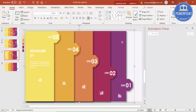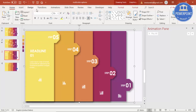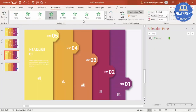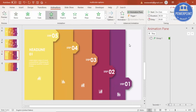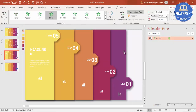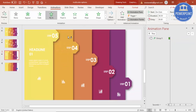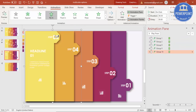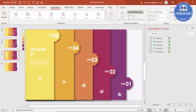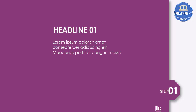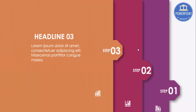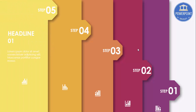Now apply the animation to step one: Fly In from Left. Then double-click Animation Painter and apply it to step two, step three, step four, and step five. In slideshow view, clicking reveals step one with the headline and optional image, then step two, three, four, and five.